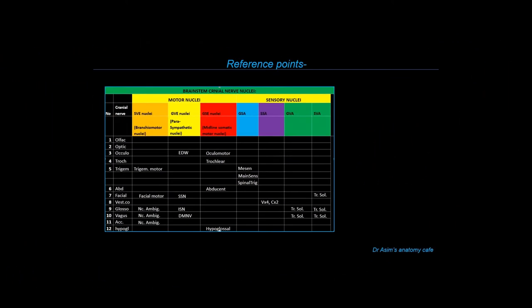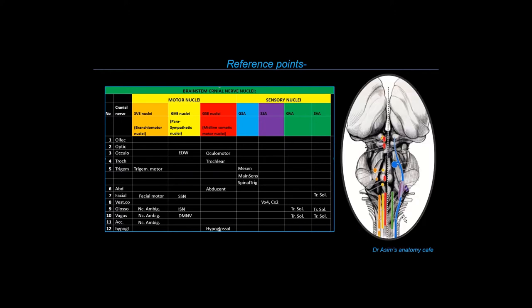Now, while describing each cranial nerve in this lecture and in the subsequent ones, I'll be using this table as a reference point to find out which cranial nerve nuclei contribute to the formation of which specific cranial nerves, and we will build upon our description of each cranial nerve from there. I'll also be using this picture as a reference point, which is a pictorial representation of the same table we have just talked about.